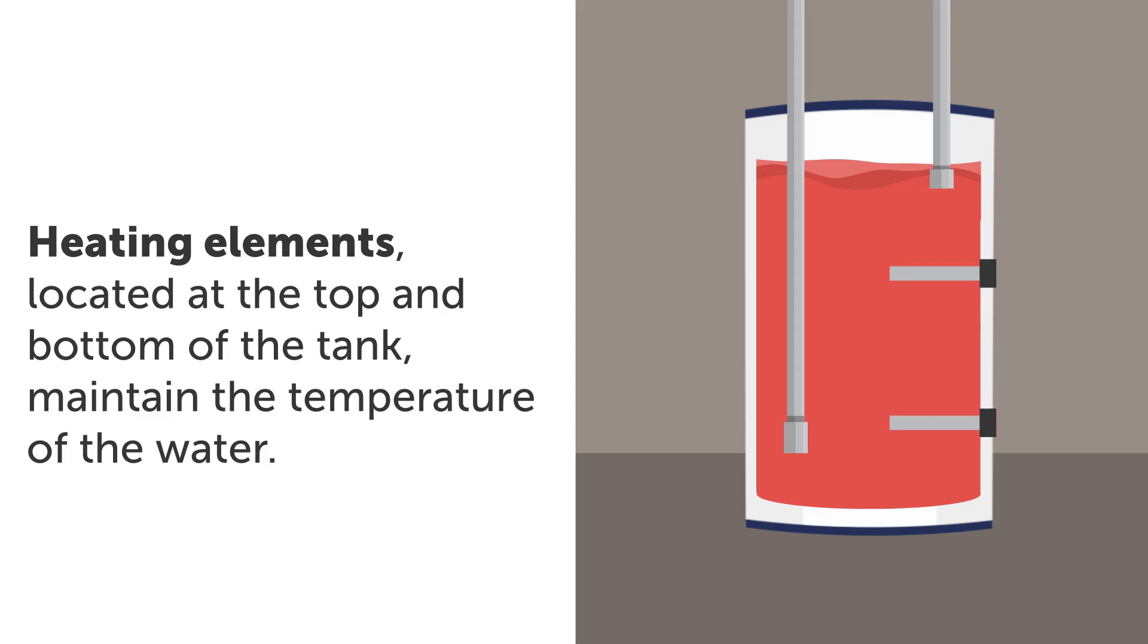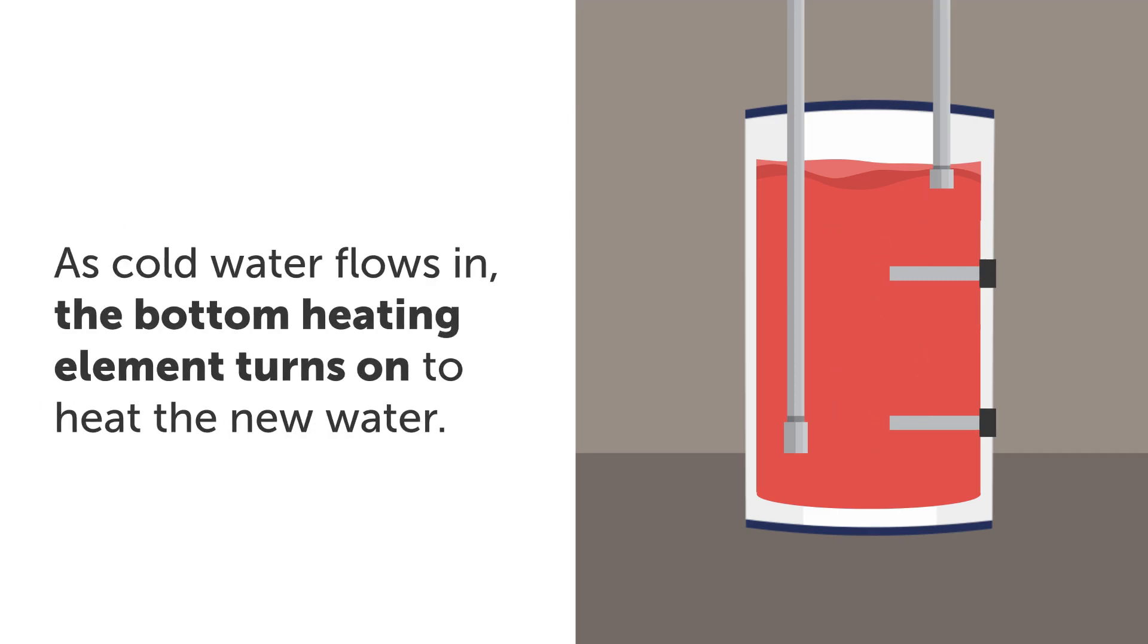Heating elements, located at the top and bottom of the tank, are used to monitor and maintain the temperature at your desired level. As cold water flows into the tank, the bottom heating element turns on to bring the new water up to the correct temperature. This ensures that your home always has hot water ready for when you need it.